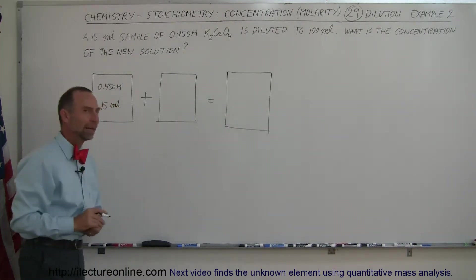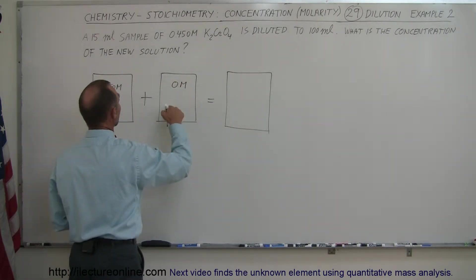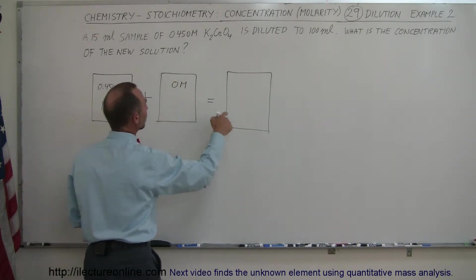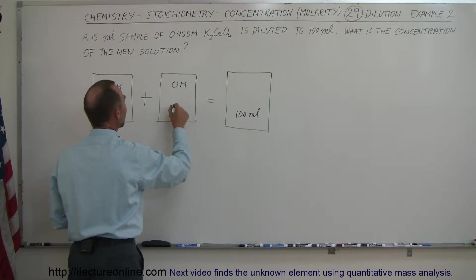The molarity here, amount there. And so now we're dealing with water. So the molarity of water is 0. And the quantity, well, we want it to add up to 100 milliliters in the end. That's what we want to end up with. Which means we're going to have to add 85 milliliters of water.